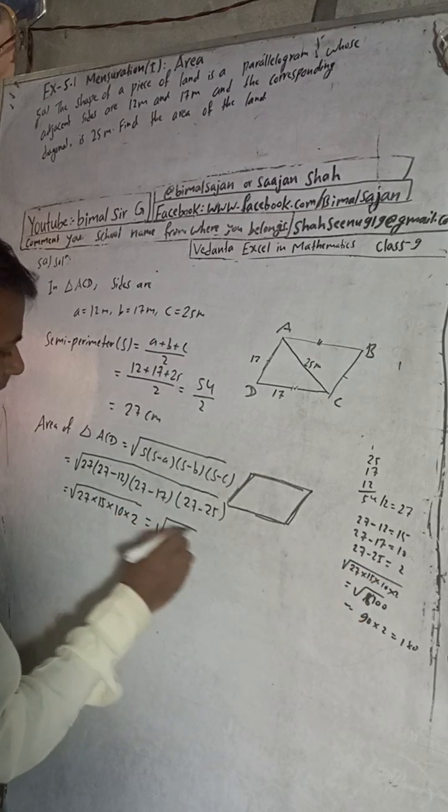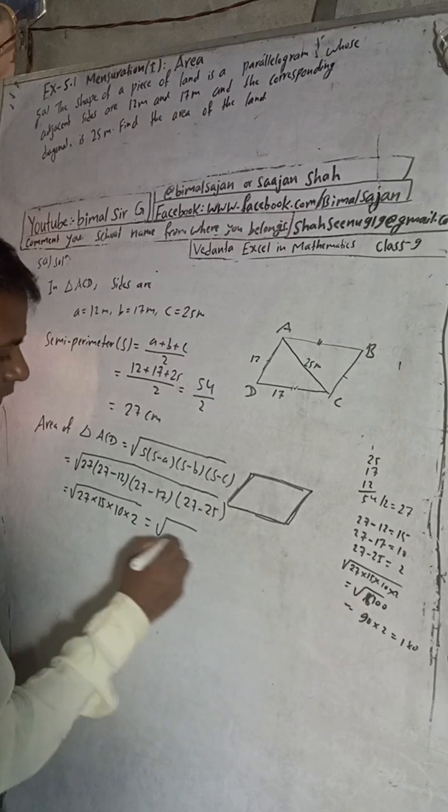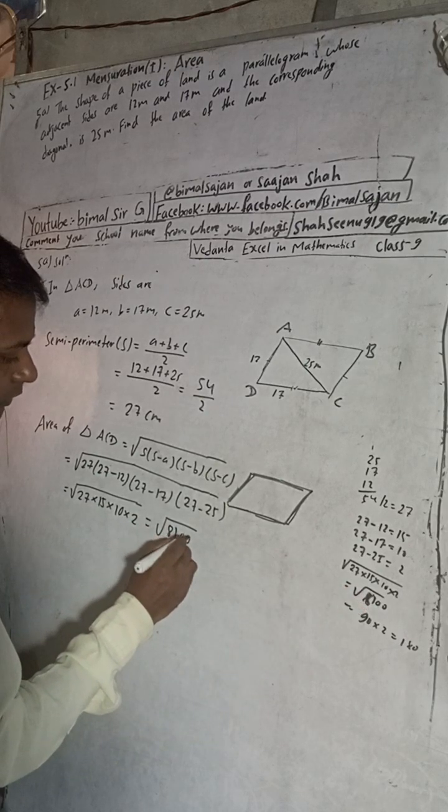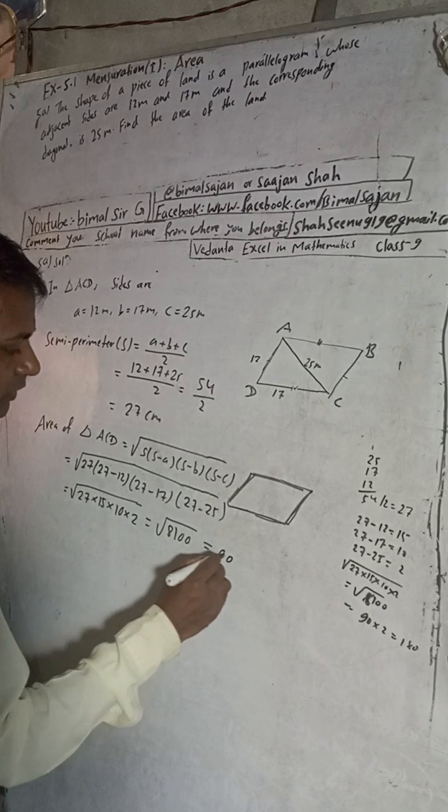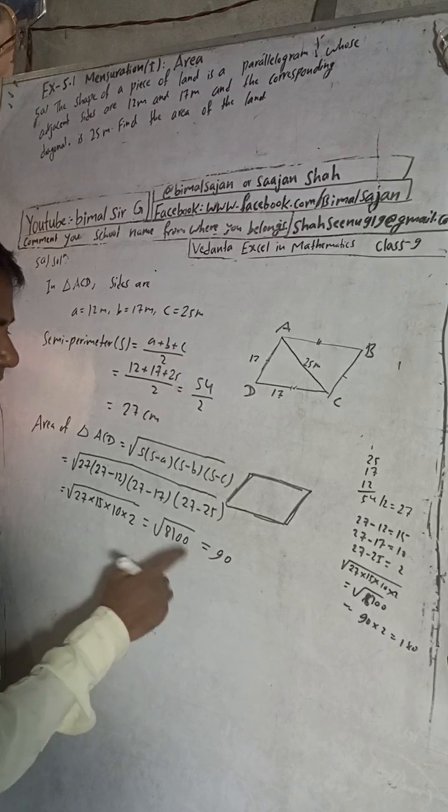When we multiply in the calculator, you will get here 8100. That means this is the root of 8100, which is 90.